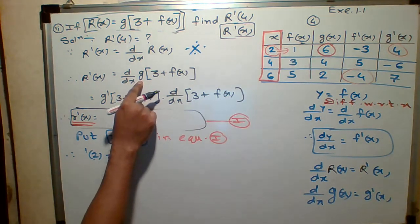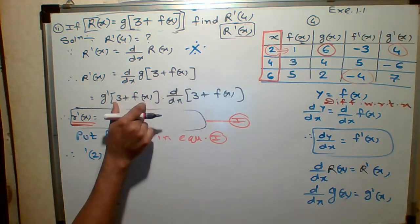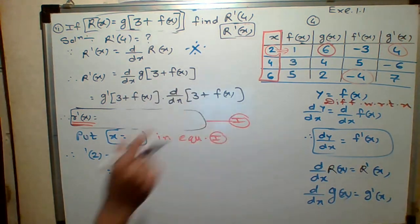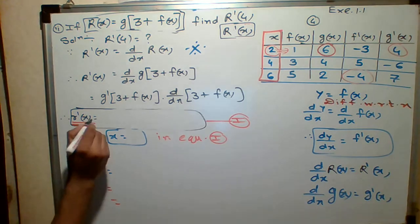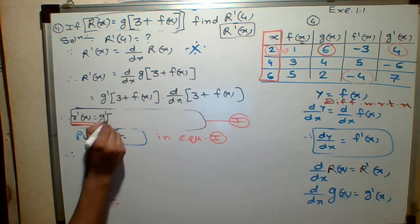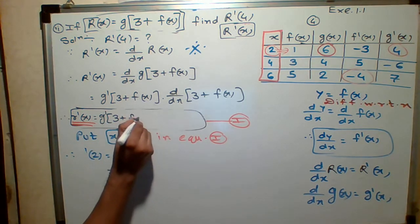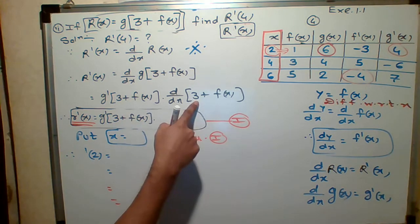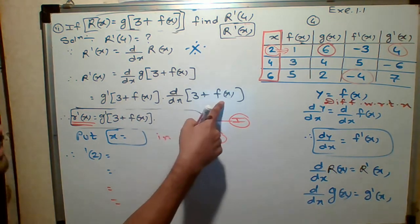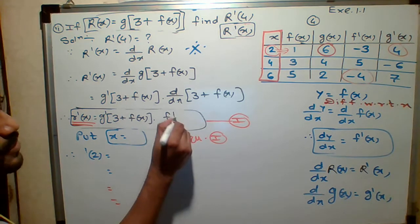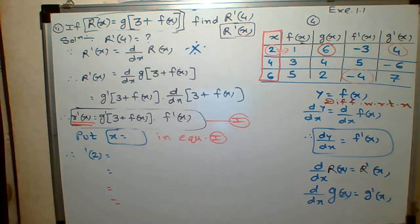Hope so this thing you understood. The first step is derivative of G is what? G dash. Under the term as it is. And then you take the derivative under all the term. Now you tell me the answer. Let's see. G dash of 3 plus F of X. Keep as it is. What is derivative of 3? 0. What is derivative of F of X? F dash of X.